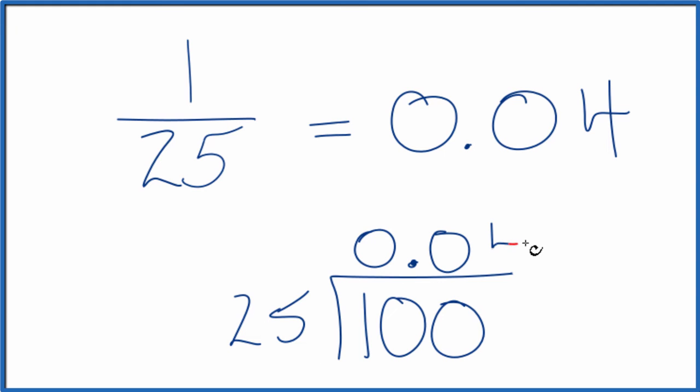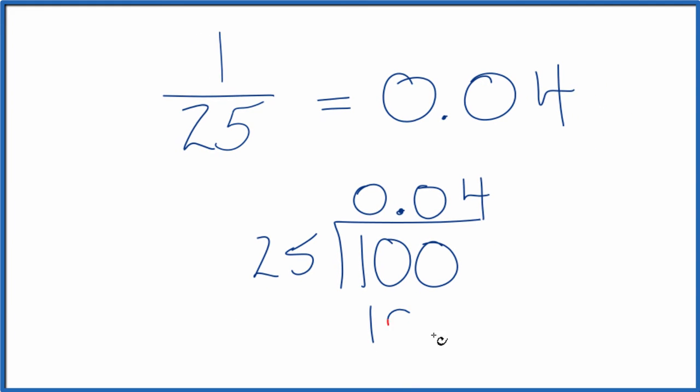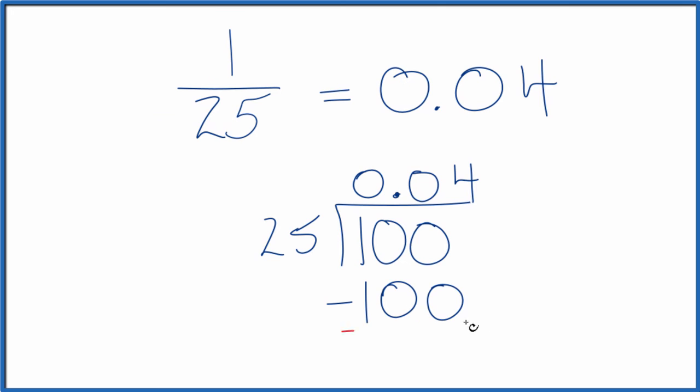Now 4 times 25, that's 100. We subtract 100 from 100, we get a remainder of 0. So 1 divided by 25 is 0.04, and that's what we found before.